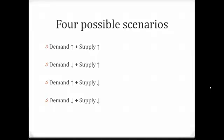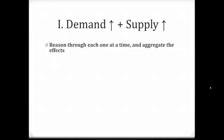Let's start with the first scenario: a simultaneous increase in demand and supply. I have found it is a lot easier to reason through the effect of each one first and then aggregate the effects of the two combined. So we are going to start by going over what happens to equilibrium price and quantity if demand increases, then look at what happens if supply increases, and then aggregate the two.